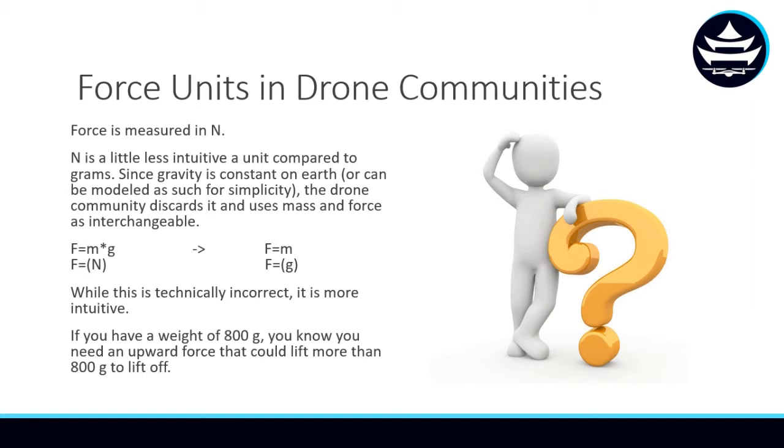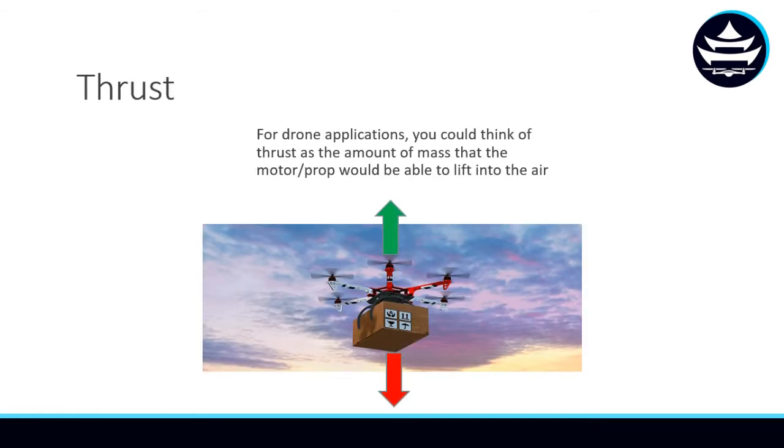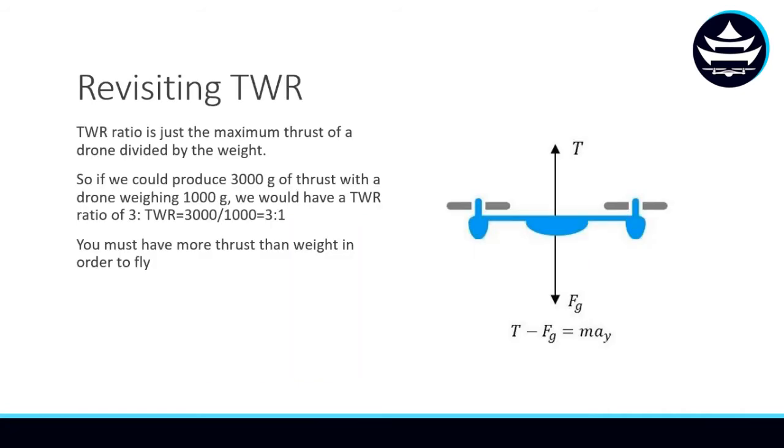Just wrapping up that last slide, for drone applications, we can think of thrust as the amount of mass that the motor prop combination would be able to lift into the air. So, if a motor prop combination has a thrust of 3,000 grams, then it would be able to hover in the air while holding a 3,000 gram payload.